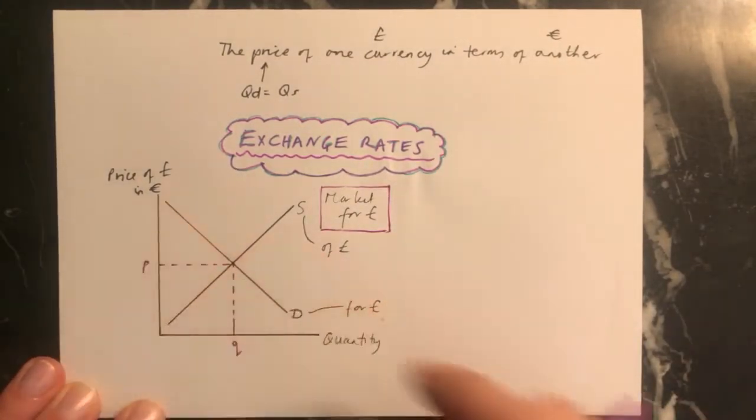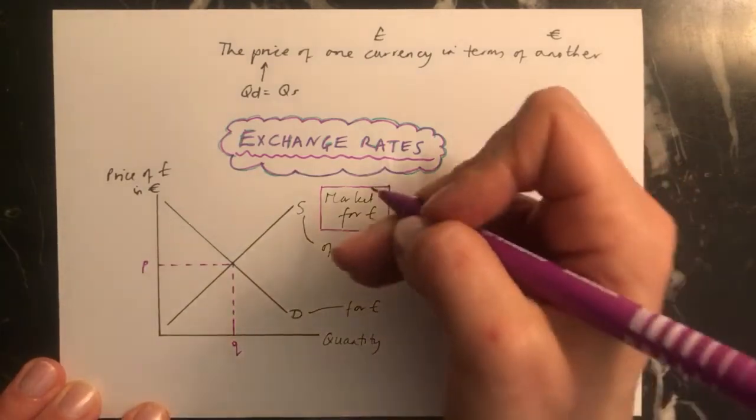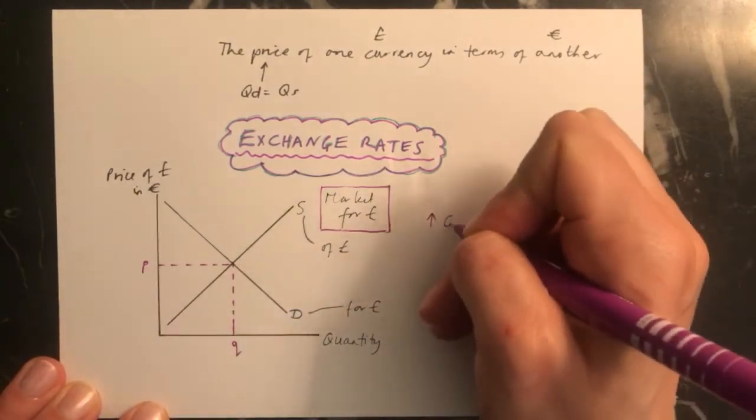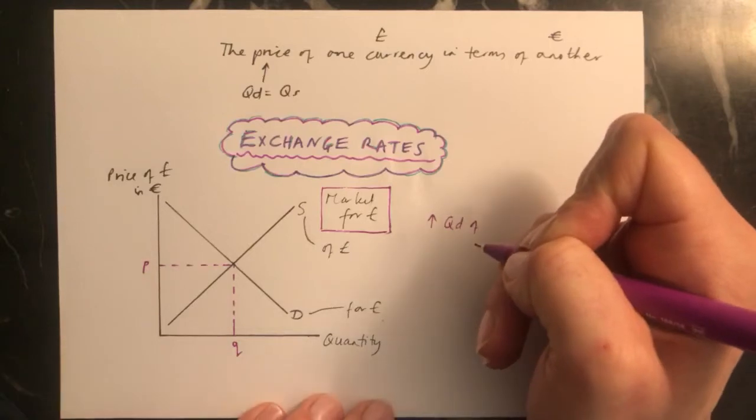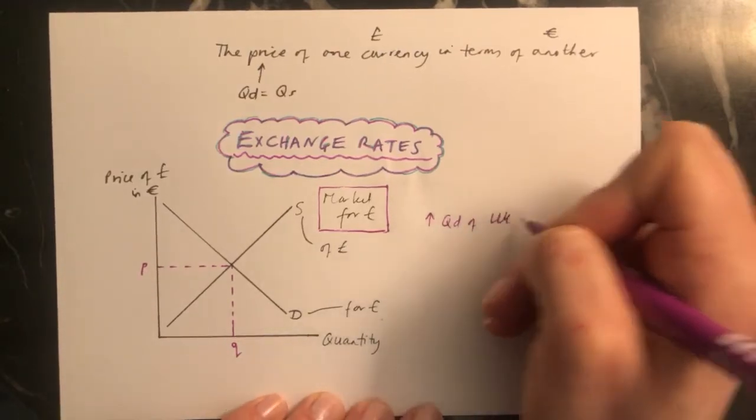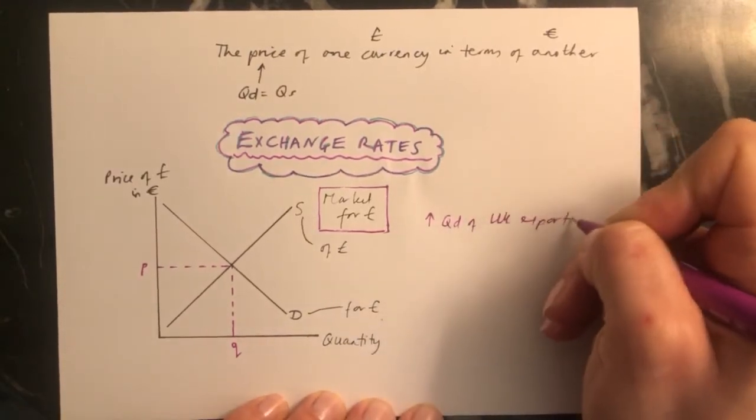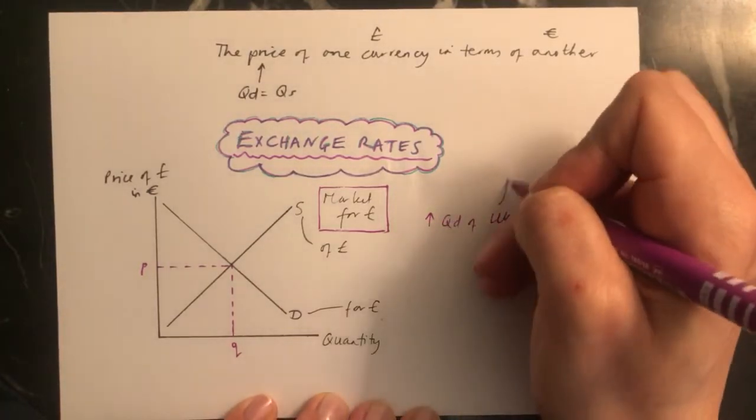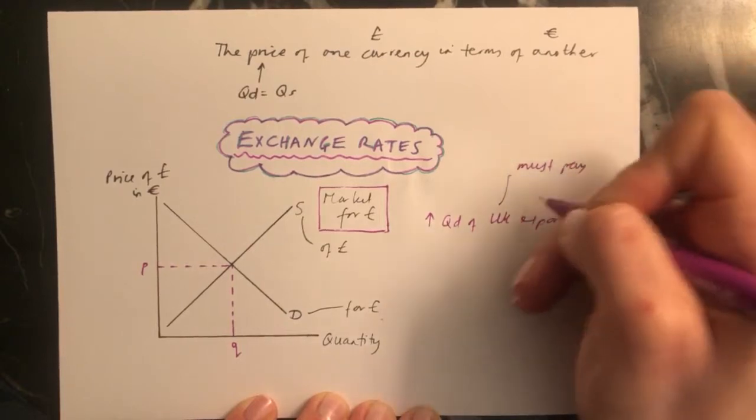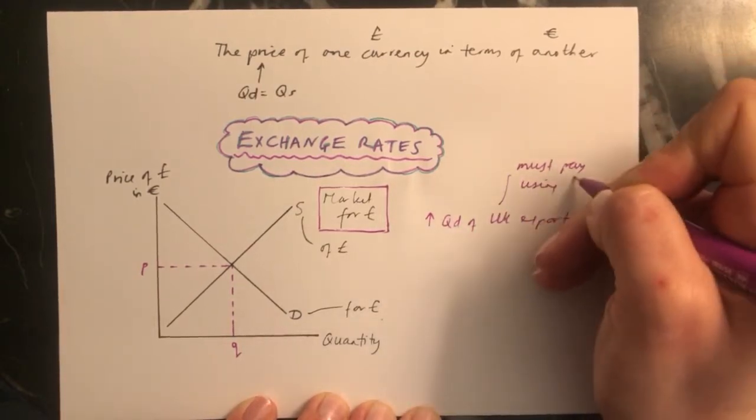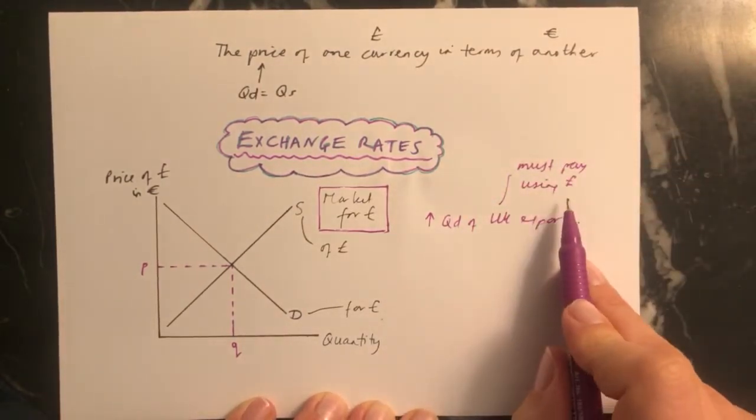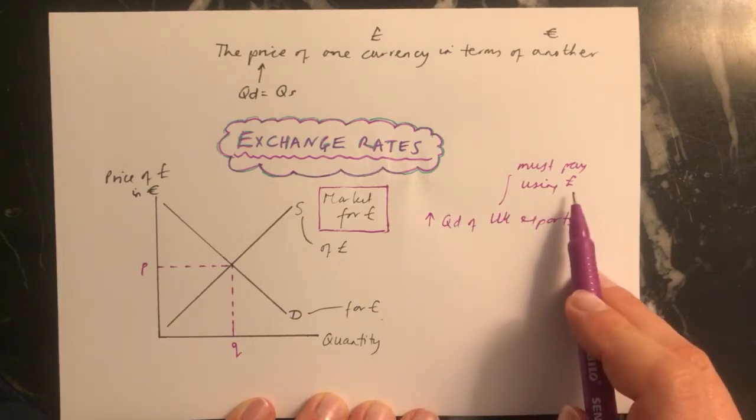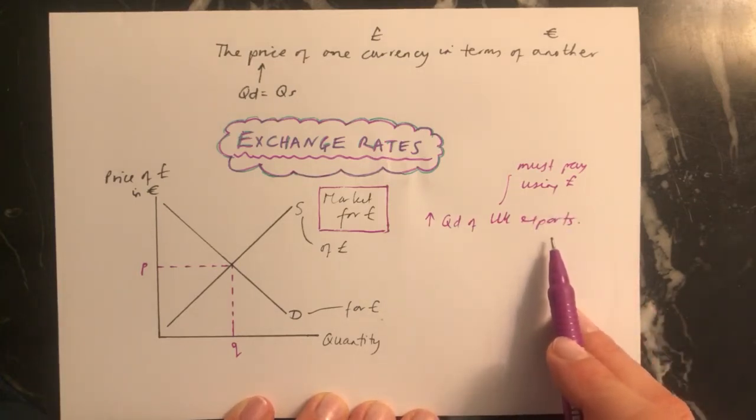So for example, if there was an increase in the quantity demanded of UK exports. Now, remember, if you want to buy something from the UK, the person buying it must pay using pounds. So if it's somebody in France, they have to buy pounds in order to buy the thing from the UK.